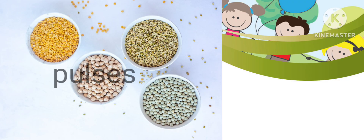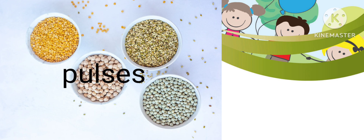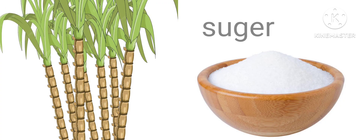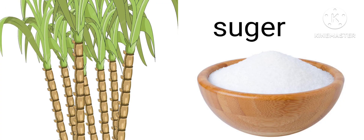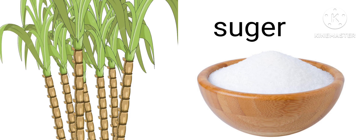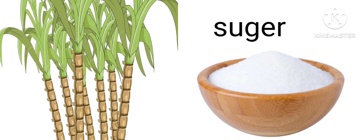Pulses. Pulses are the seeds of the plant which are used to cook, also known as dals. Sugar. We get sugar from the juices of the sugar cane stem.